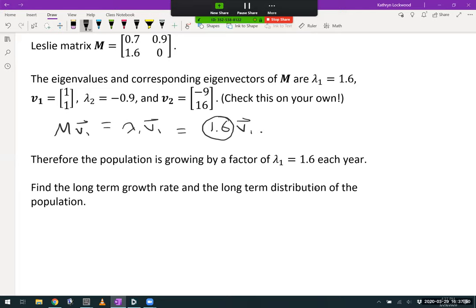Now, there's a reason we're not using lambda 2 as the growth factor. It corresponds to an eigenvector V2, where one of the components is negative. And for population vectors, it doesn't make sense to have a negative component. We don't know what it means to have a negative population. So that's why we're going to stick with using lambda 1, the positive eigenvalue, as our growth factor.